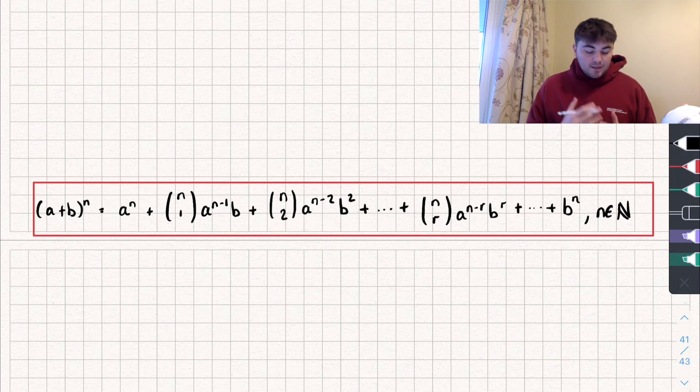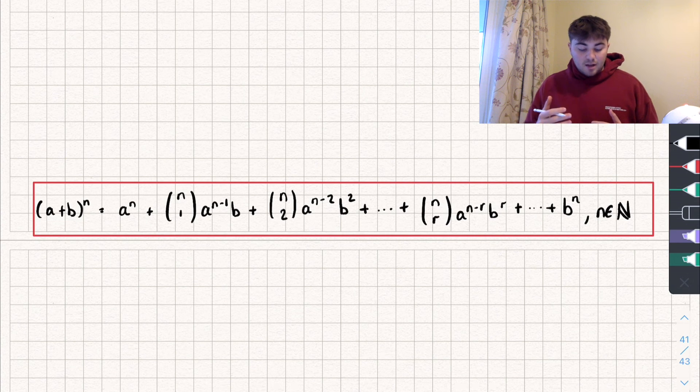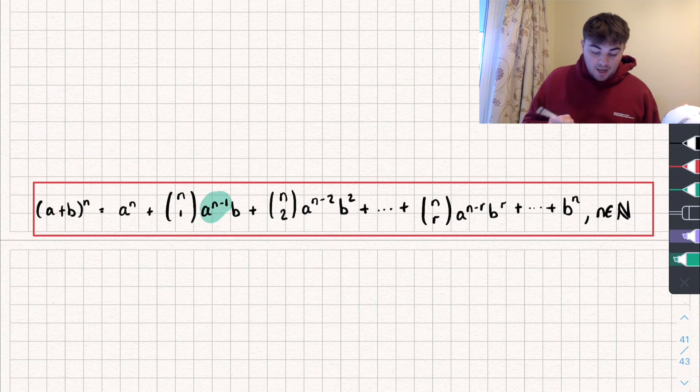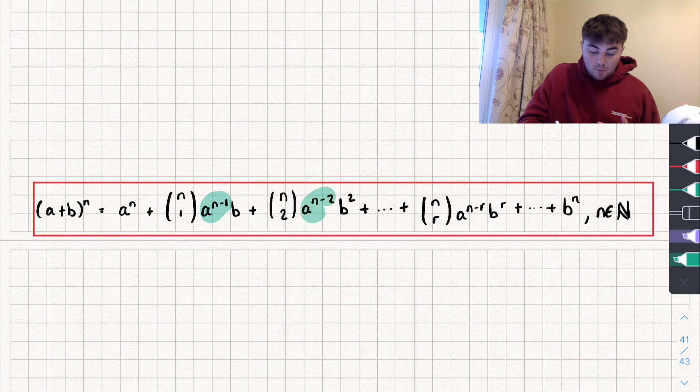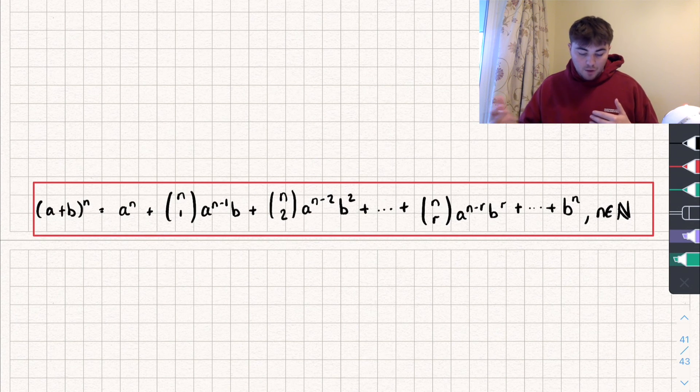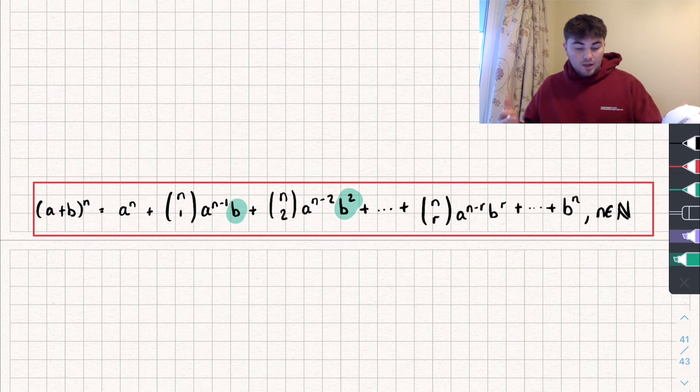So it says if we want to expand a plus b all to the power of n, then our first term is going to be a to the power of n. And then in the next term we just reduce the power that a is to by 1. You can see here a to the power of n minus 1. In the next term we reduce it by another one, so it's n minus 2, and so on. So in each term the power of a is reduced by 1. Now we start off with b to the power of 0, and then in each following term we increase it by 1. So the next term it's b to the power of 1, b to the power of 2, and so on until we get to b to the power of n. So that's not too bad.